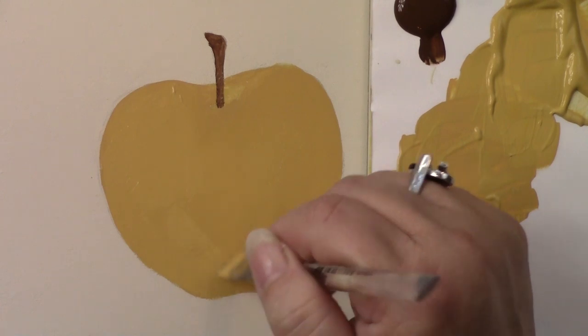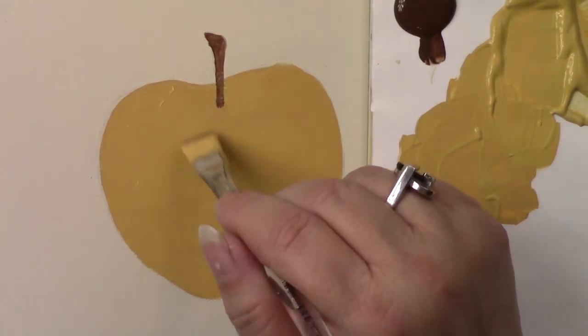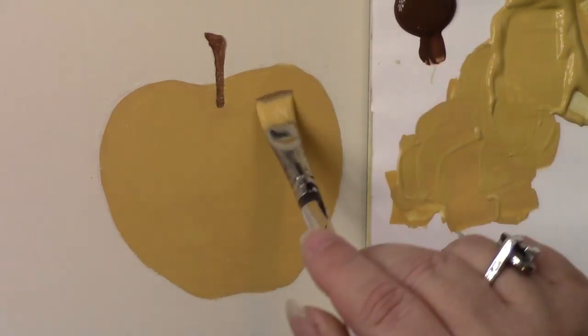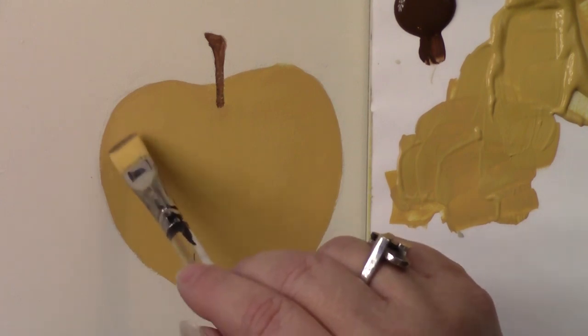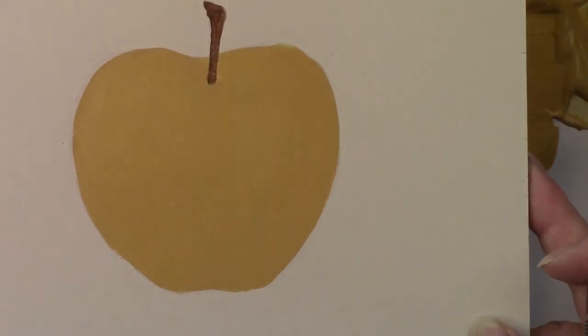So I'm going to clean up this edge, make it look really pretty. Make sure that there's no ridges anywhere in the paint. And that's looking nice and smooth and even now.